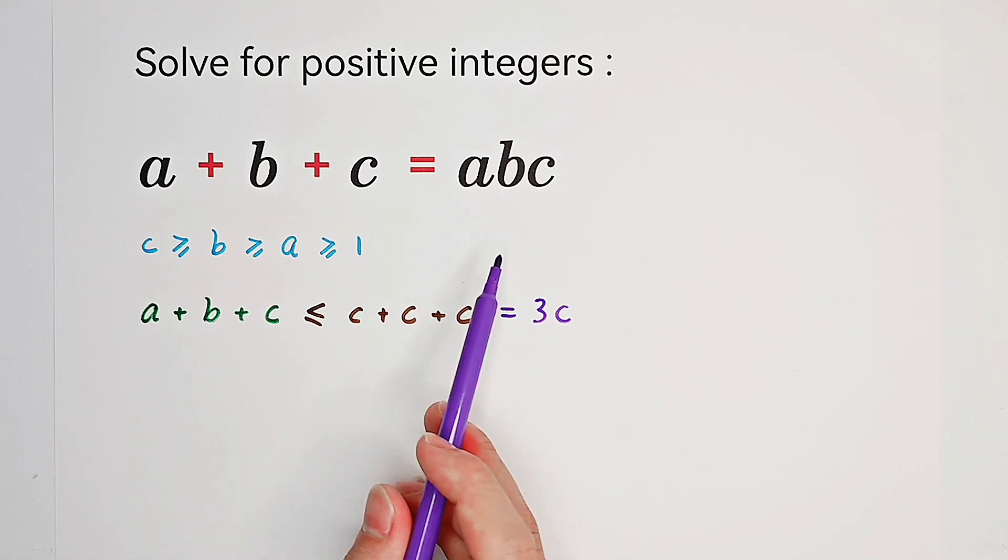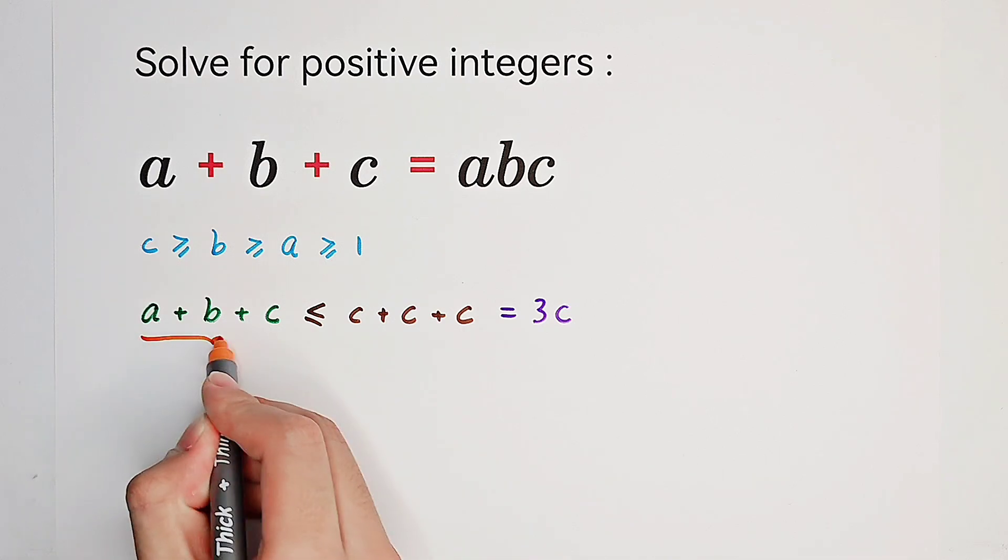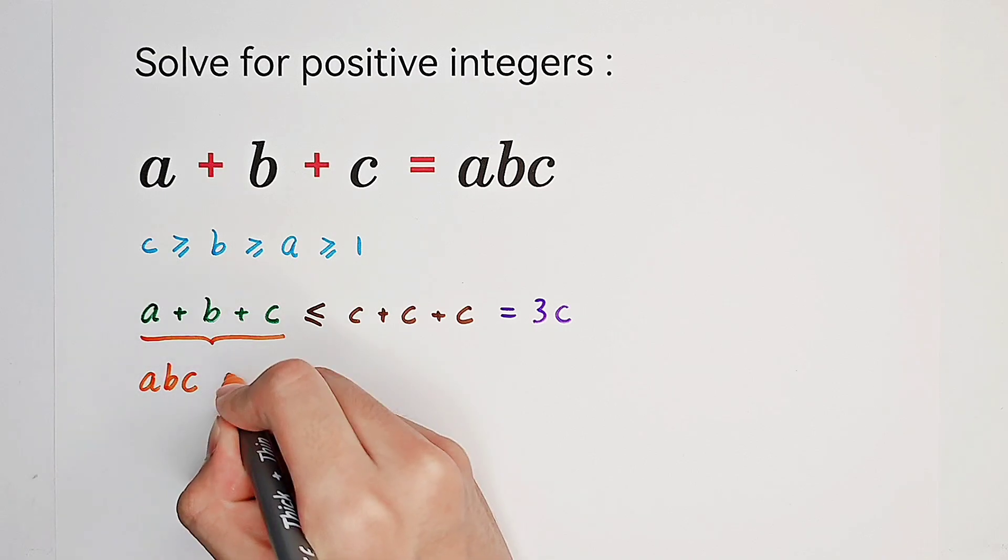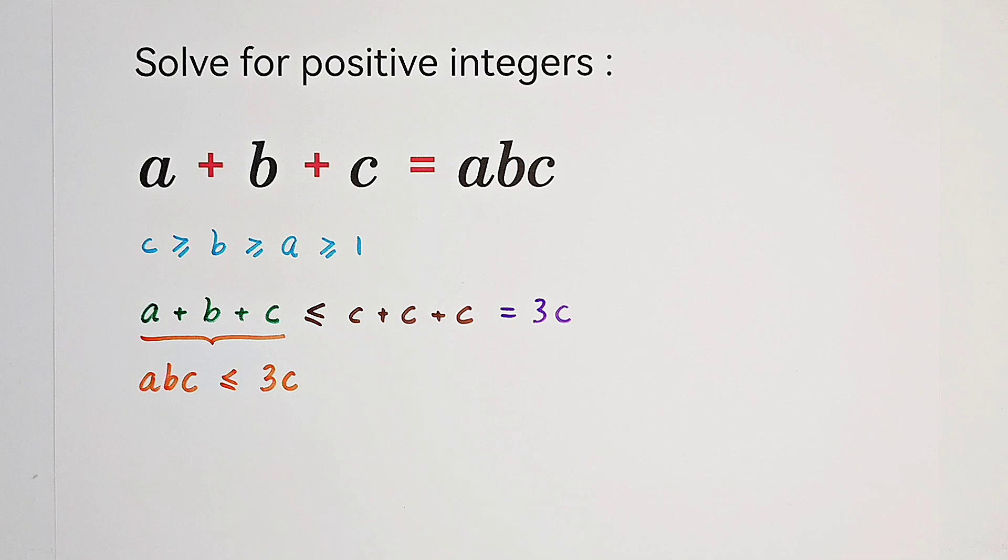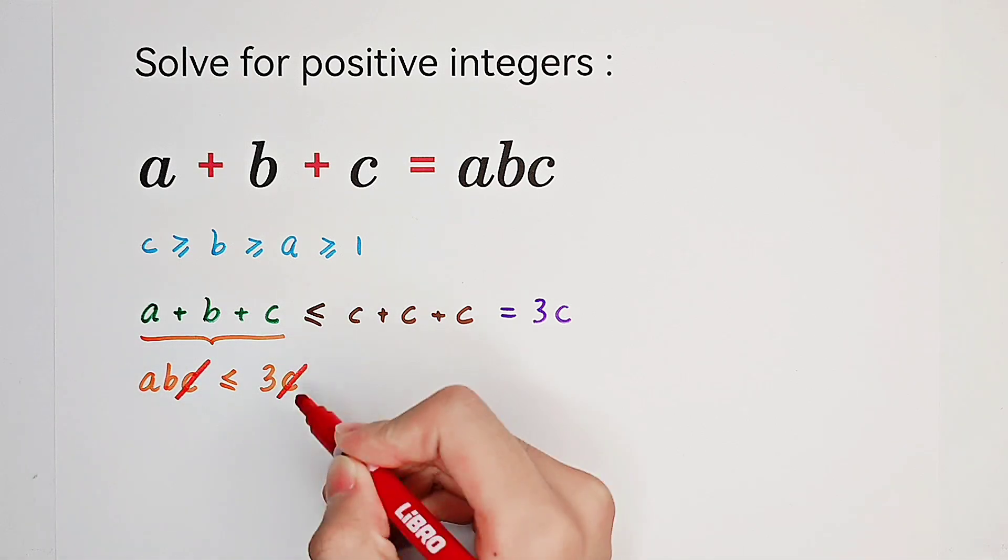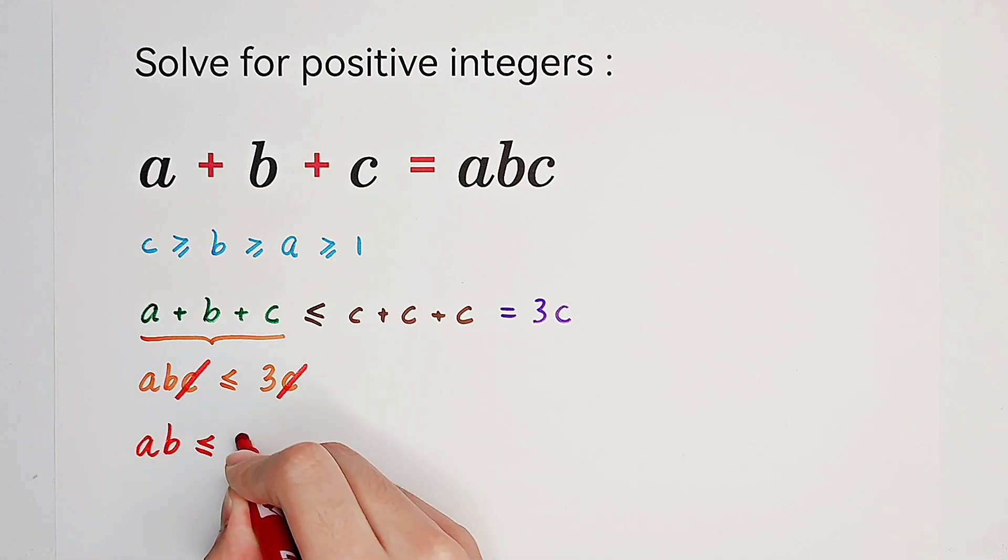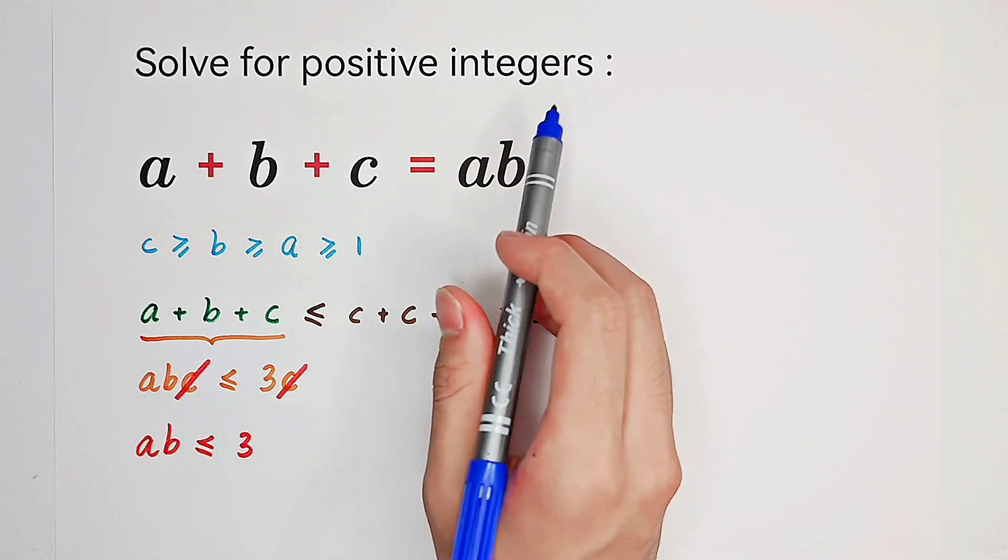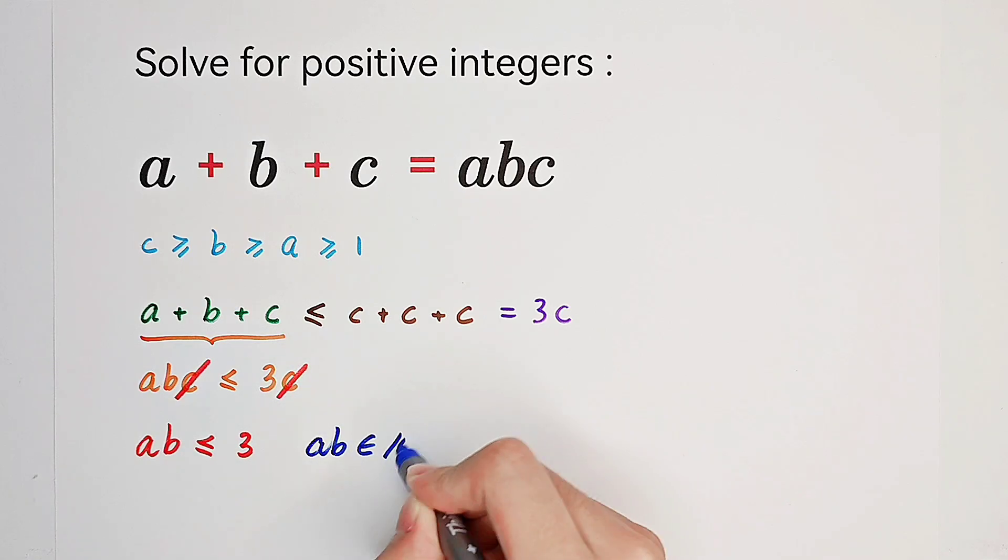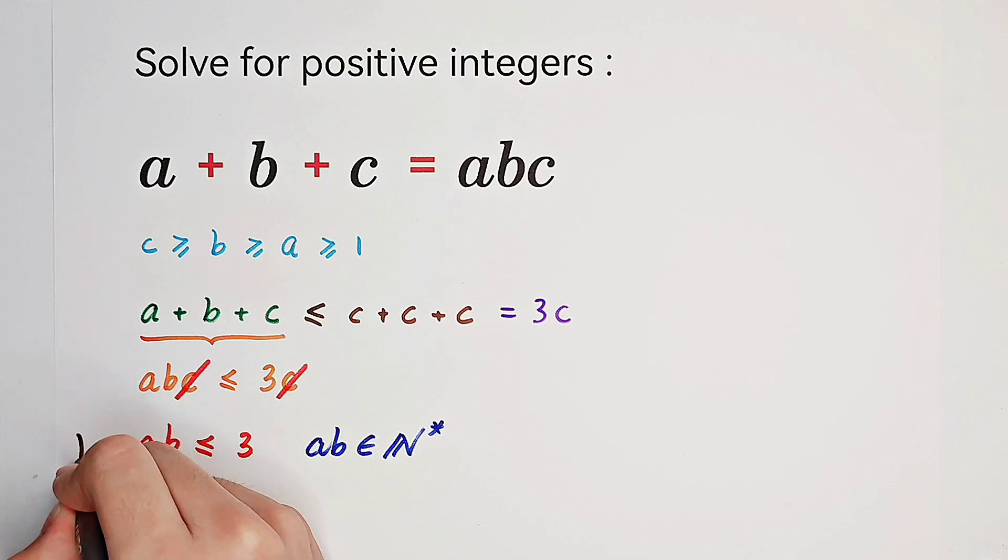Now, since A plus B plus C equals A times B times C, the left-hand side is just equal to A times B times C. So we get A times B times C is also less than or equal to 3C. Since we have the divisor C on both sides, and it's not equal to 0, we can just cancel it from both sides. So then we get the product of A and B is less than or equal to 3. A and B are positive integers, so A times B should also be a positive integer. That means it is also bigger than or equal to 1.